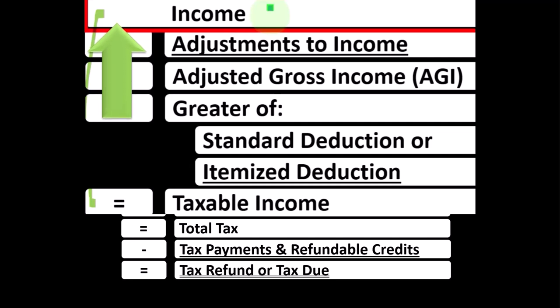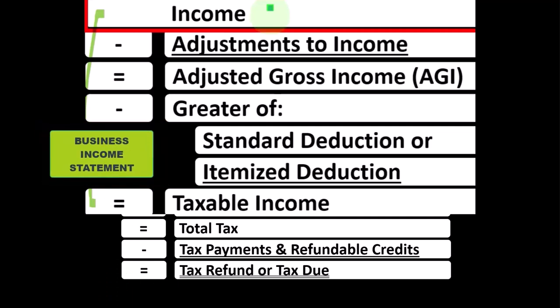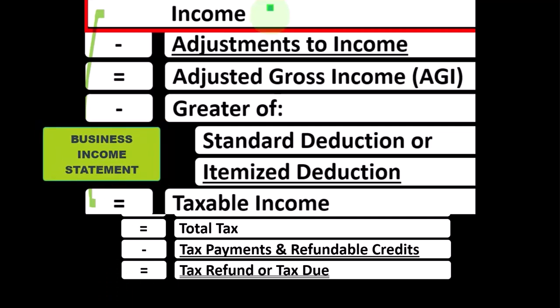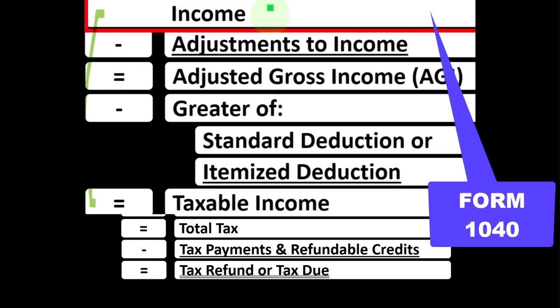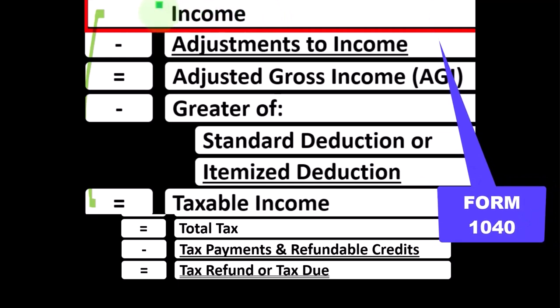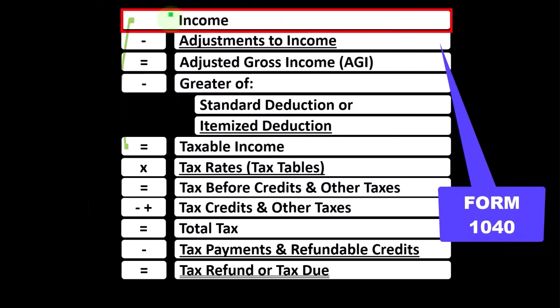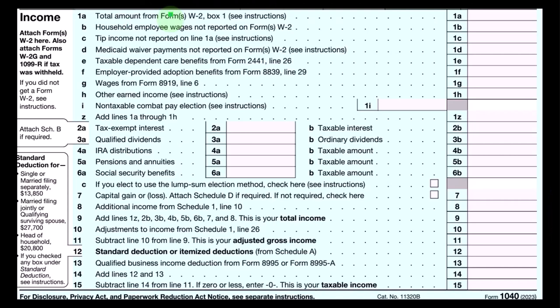The Schedule C itself is basically a business income statement where we have business income minus business expenses, which are basically business deductions, resulting in net business income from the Schedule C. This will in essence roll into page one of the Form 1040, represented by our formula of line one income.